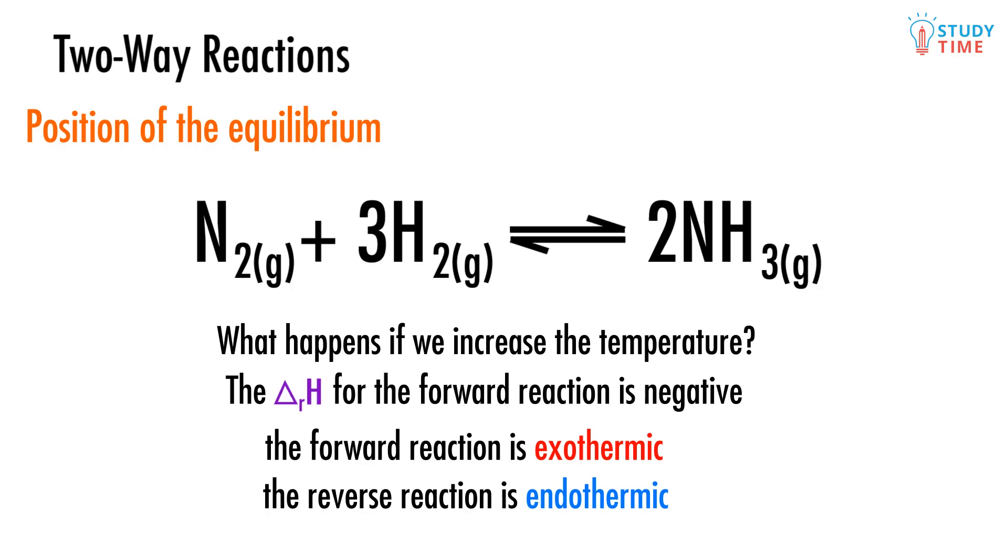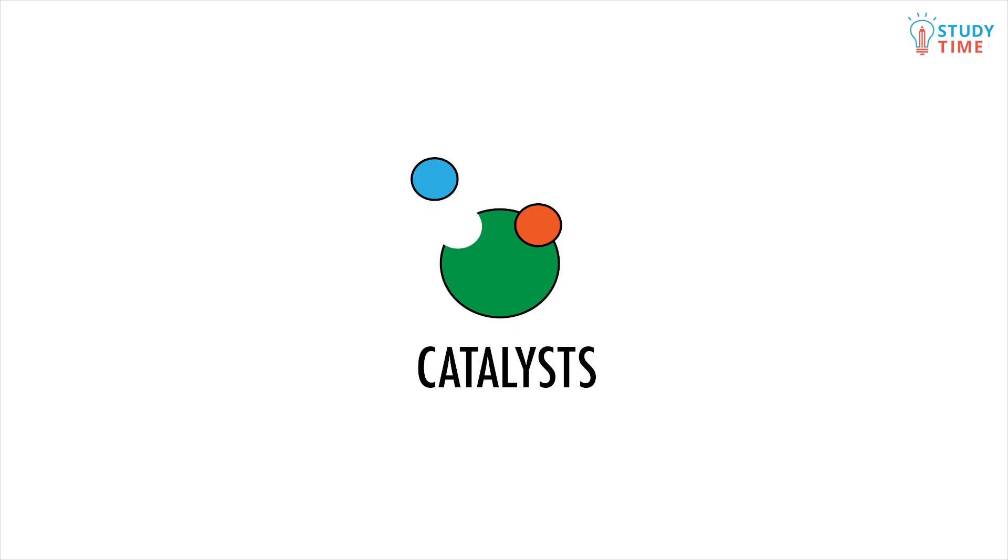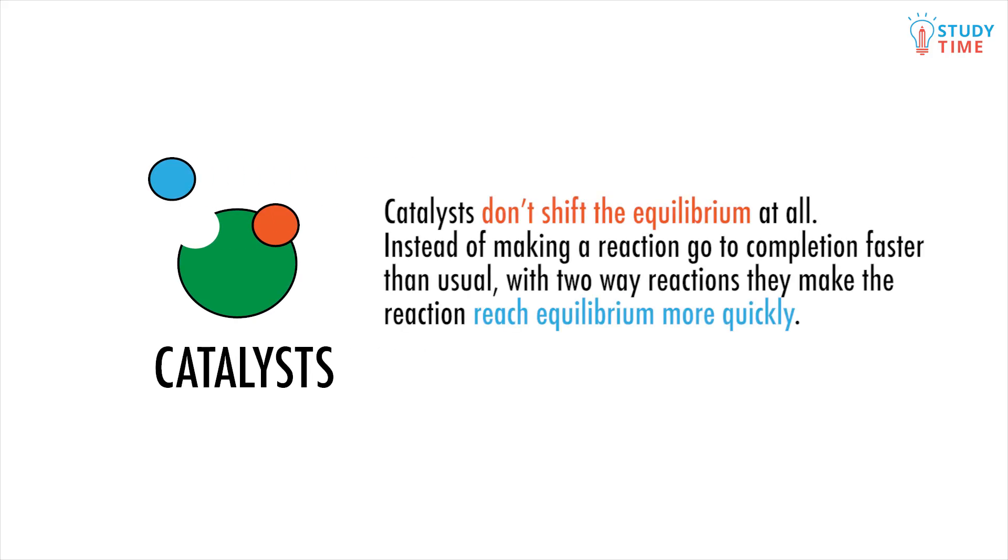One final thing to keep in mind. Catalysts, those handy dandy things you learned about in the last video, don't shift the equilibrium at all. Instead of making a reaction go to completion faster than usual as they normally would, with two-way reactions, they make the reaction reach equilibrium more quickly.